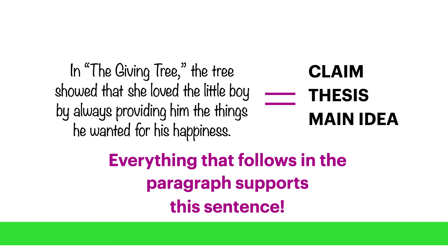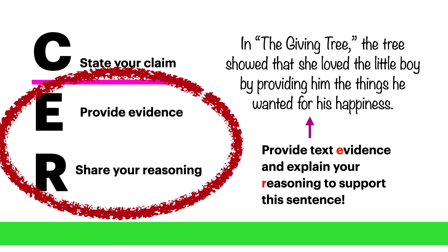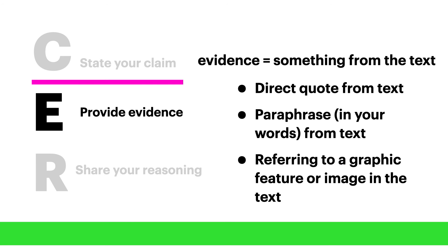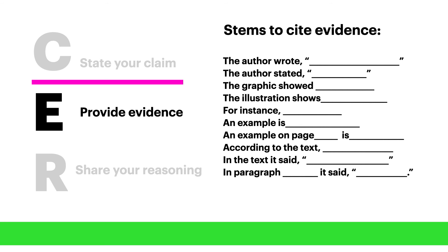Other words for claim might be your thesis sentence or your main idea sentence. Everything that follows in the paragraph will support this claim sentence. But making a claim is not enough. Next, you want to provide text evidence from the story, and then explain your reasoning to support your claim. Evidence refers to something directly from the text — it can be a direct quote, you can paraphrase something in your own words, or you can refer to a graphic feature or an image in the text. Here are some possible sentence stems that you can use to start out this part of your paragraph. Take a screenshot or write these down and use them to help you as you start to provide evidence in your paragraph.